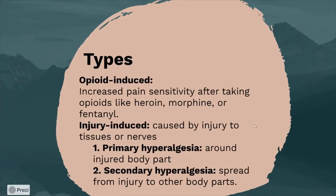There are two main types of hyperalgesia: opioid-induced and injury-induced. In opioid-induced, increased pain sensitivity occurs after taking opioids like heroin, morphine, or fentanyl. In injury-induced, it's caused by injury to tissues or nerves. The first subtype is primary hyperalgesia, which is pain around the injured body part, and the second is secondary hyperalgesia, which is when the pain spreads from the injury to other body parts.